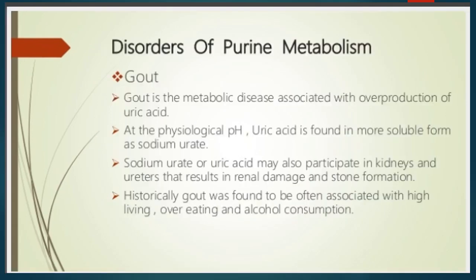There are some disorders of purine metabolism. The first is gout and the second is hyperuricemia. Gout is a metabolic disease associated with the overproduction of uric acid. At physiological pH, uric acid is found in a more soluble form as sodium urate. Sodium urate may also accumulate in the kidney and ureters, resulting in renal damage and stone formation.